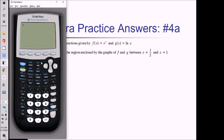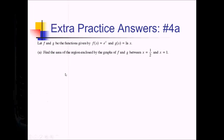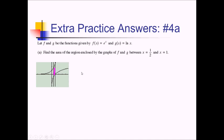To draw vertical lines, I go to second program for the draw menu, option 4 gives me vertical lines, and I just write the x value. So we're going to have one-half — there's that vertical line. And now a vertical line at x equals 1. We've got this bounded region that we're trying to find the area of. We're going to use the integral from one-half to 1 of top function minus bottom function, which is e to the x minus ln of x, or F of x minus G of x, dx.